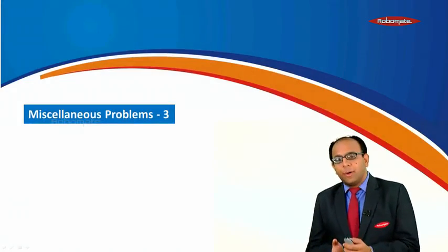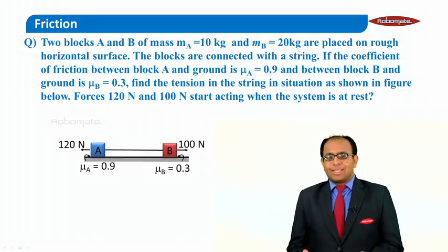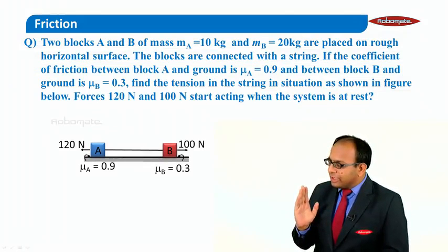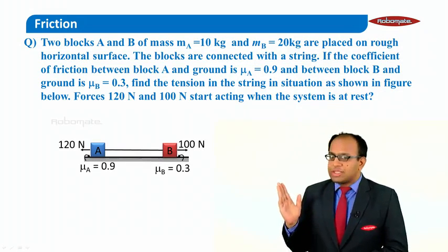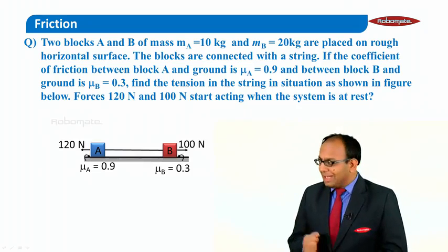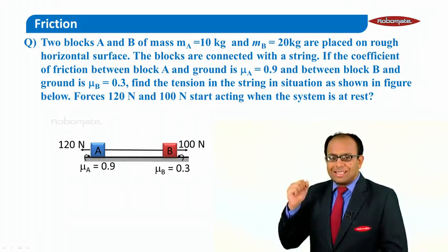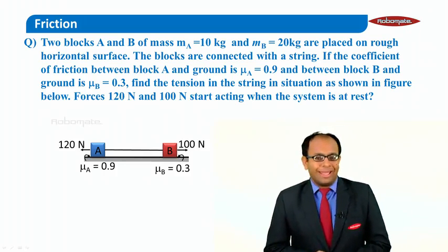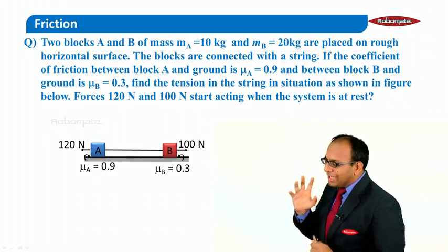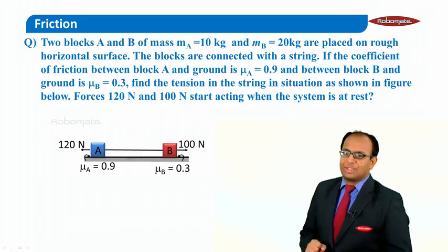Welcome back students. We are talking about friction problems - let's continue with a few more examples. In this given example, we have two blocks A and B. There is a force of 120 Newton acting on the left of A and a force of 100 Newton acting on the right of B. The coefficient of friction between A and the surface is 0.9 and between B and the surface is 0.3. Mass of A is 10 kg and mass of B is 20 kg. We have to find the tension in the string.